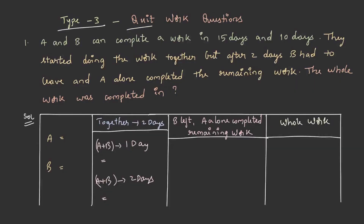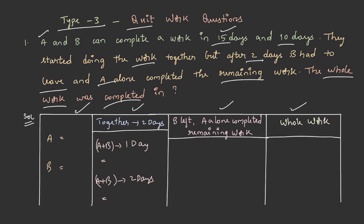We are done with category 2. What would happen if a person leaves or quits from a work after a certain period of time? Type 3 — quitting from work questions. A and B can complete a work in 15 days and 10 days respectively. They started doing the work together but after 2 days, B had to leave and A alone completed the remaining work. The whole work is completed in how many days? A's part of work done in 1 day is 1 by 15, and B's 1 day part is 1 by 10. They worked together for only 2 days.